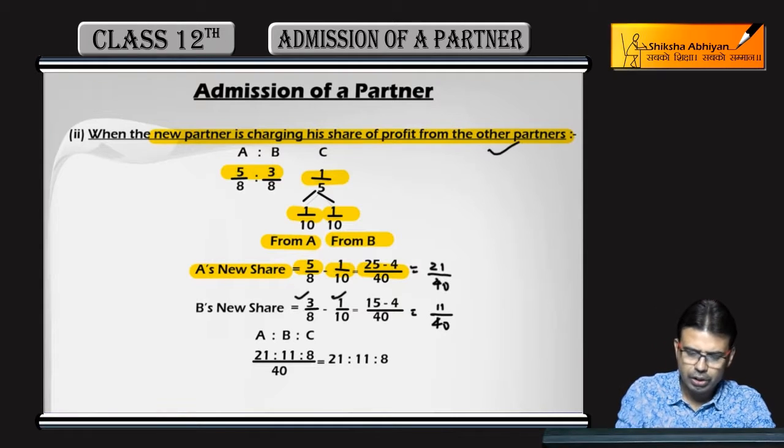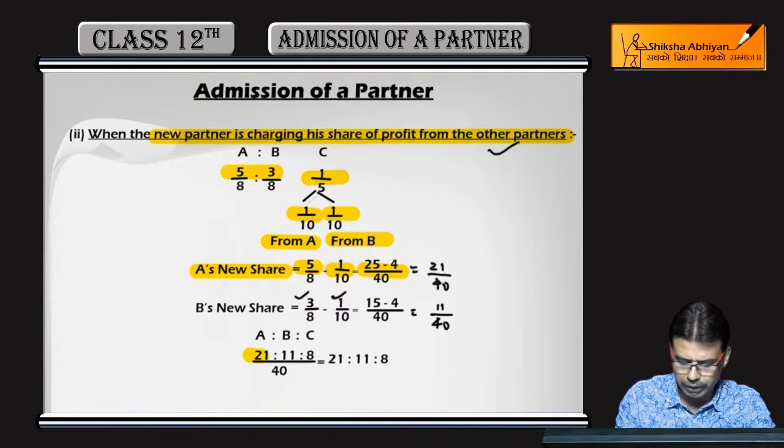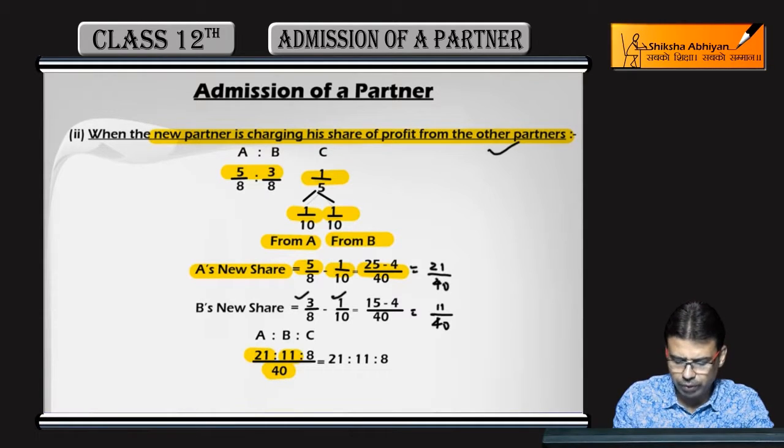And the new profit sharing ratio will be 21 by 40, 11 by 40, and 1 by 5.